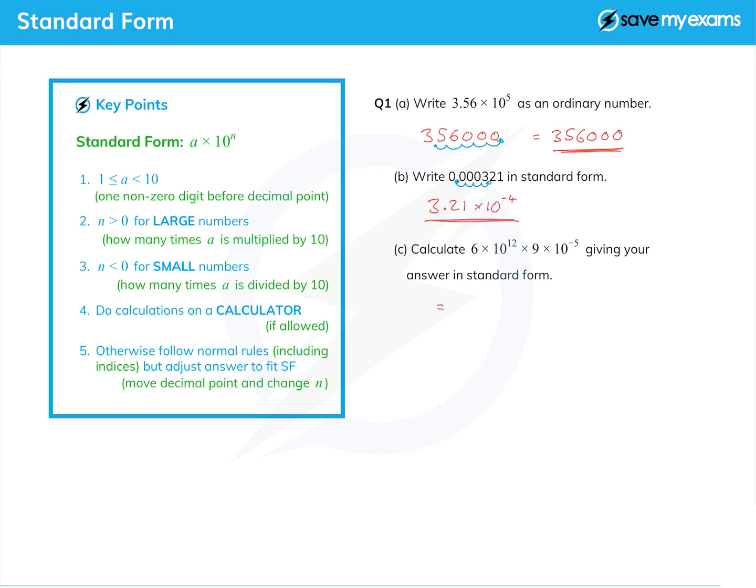Let's write it in a slightly different way. Let's look at the normal number bits to start with. The order of multiplication is not important, so I can rearrange them. So 6 times 9, and then let's look at the bits with powers of 10: 10 to the 12 times 10 to the minus 5.